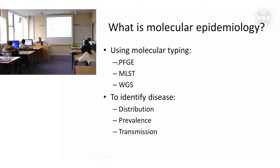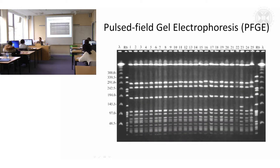You might also want to know the nature of a particular disease that you're looking at and the prevalence of it. There are a variety of different ways that you can do molecular epidemiology: pulse field gel electrophoresis, multi-locus sequence typing, and whole genome sequencing. I'm going to elaborate on these — they're basically different levels of resolution.